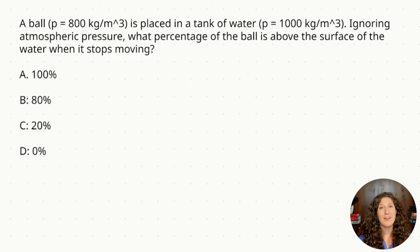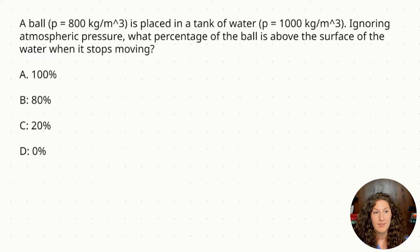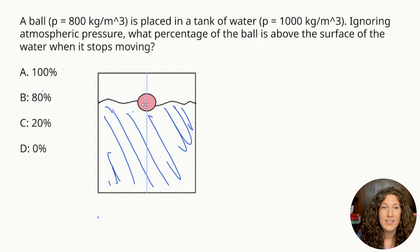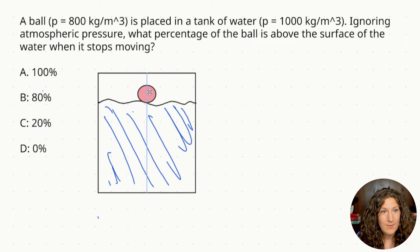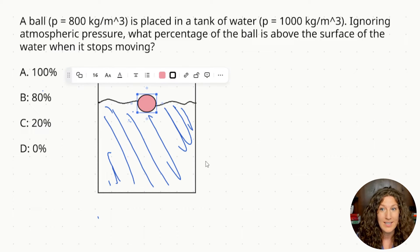You might ask: where are all my variables? Where is my volume of the fluid displaced? Where is my mass? We're going to have to break down this question conceptually before we can do the math. So let's start by visualizing the scene. We have our tank, we have our ball, and we're trying to see where this ball is. Is it floating — 100% above the surface, which would be answer A? Is it fully submerged at 0%, which would be answer D? Or is it somewhere in between, answer B or C?